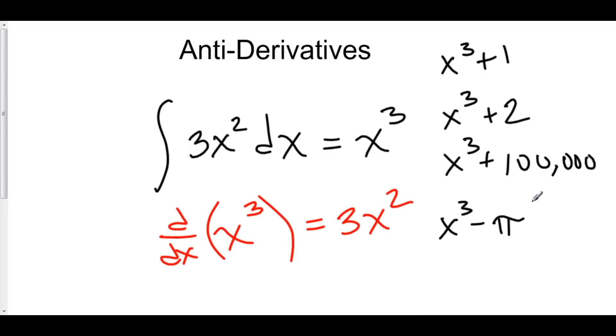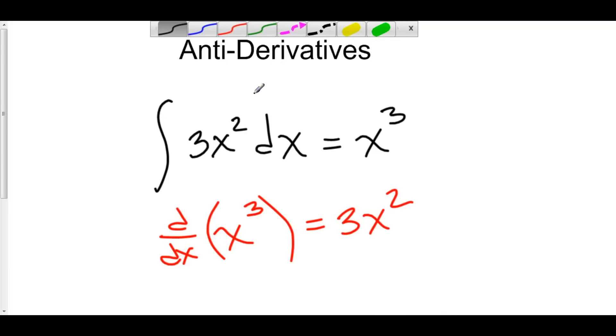In fact, even between x cubed plus 1 and x cubed plus 2, there are an infinite number of different possible functions that could represent the antiderivative of 3x squared. And this is why we call the antiderivative of 3x squared a family of antiderivatives. We're looking at a family of antiderivatives.